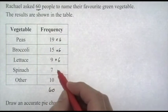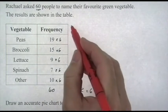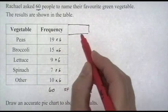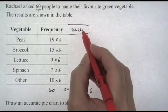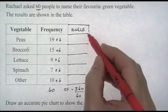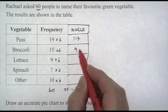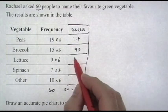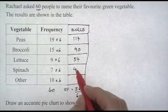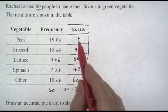We can add a column at the end here—that'll be our angle column. We're just going to multiply all the frequencies by 6: 19 times 6 is 114, 15 times 6 is 90, 9 times 6 is 54, 7 times 6 is 42, and 10 times 6 is 60. Add them up and they come to 360.